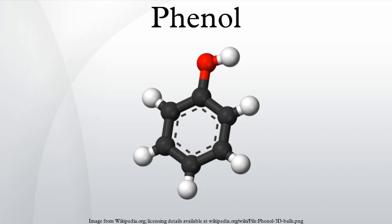Direct oxidation of benzene with nitrous oxide, a potentially green process: C6H6 + N2O → C6H5OH + N2. Oxidation of toluene, as developed by Dow Chemical: C6H5CH3 + 2O2 → C6H5OH + CO2 + H2O. In the Lummis process, the oxidation of toluene to benzoic acid is conducted separately. Phenol is also a recoverable by-product of coal pyrolysis.